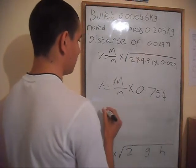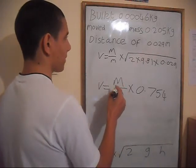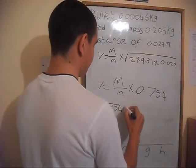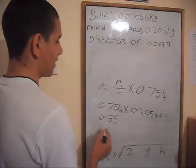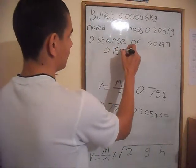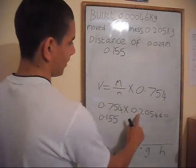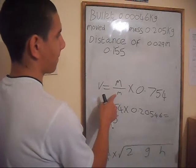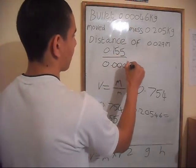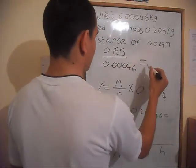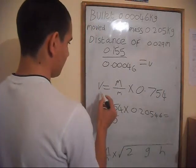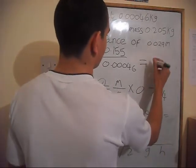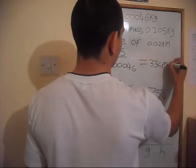We multiply the velocity of the block by the combined mass of the block and bullet, which equals 0.155. Then we divide by small m, the mass of the bullet, and that gives us V — the velocity of the bullet — which is 336 metres per second, as we got before.